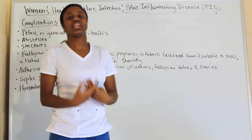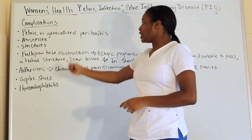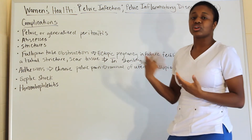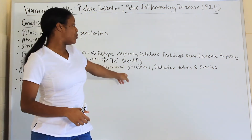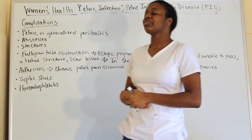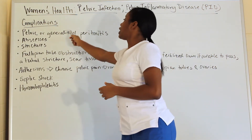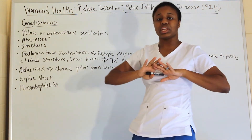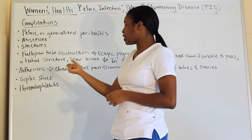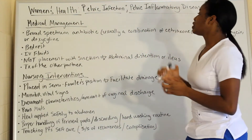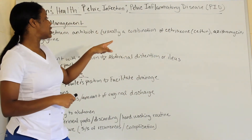Adhesions can lead to chronic pelvic pain, which may ultimately result in surgical removal of the uterus, fallopian tubes, and ovaries. Septic shock is also possible, especially if peritonitis develops and the infection perforates outside those walls. Thrombophlebitis is another potential complication.